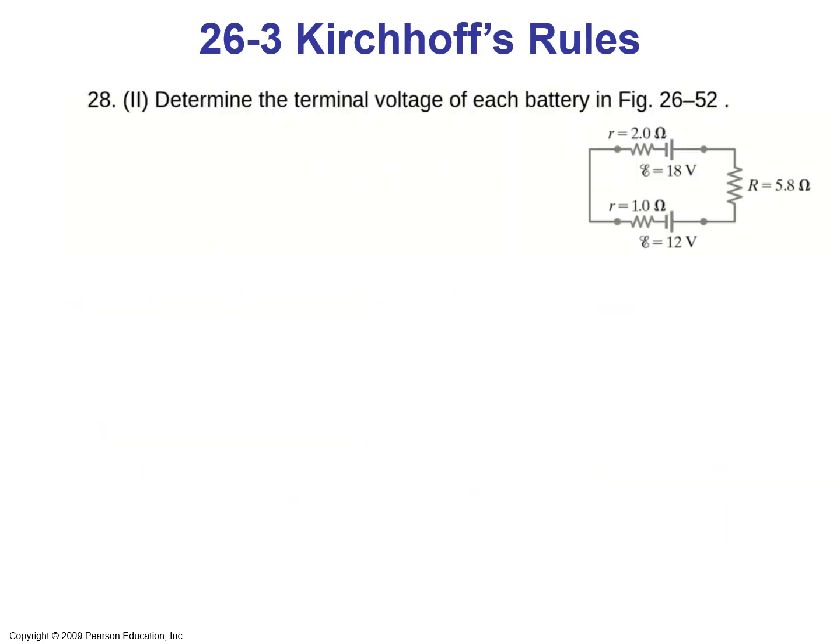As an example, let's look at problem number 28 from the book: determine the terminal voltage of each battery in figure 26-52. By applying Kirchhoff's loop rule to the circuit starting at the upper left corner, we can calculate the current. We assume the current is flowing clockwise. If the current ends up with a negative value, it means our initial assumption was wrong.